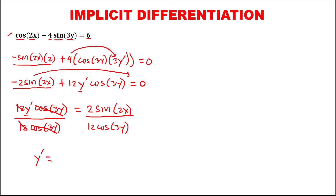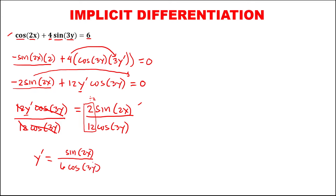So we have now y prime equals this 2 over 12, reduce, divisible by 2. So the numerator becomes sine 2x, because this becomes 1, and 12 divided by 2 is 6. So y prime equals sine 2x over 6 cosine 3y. This is now the derivative.